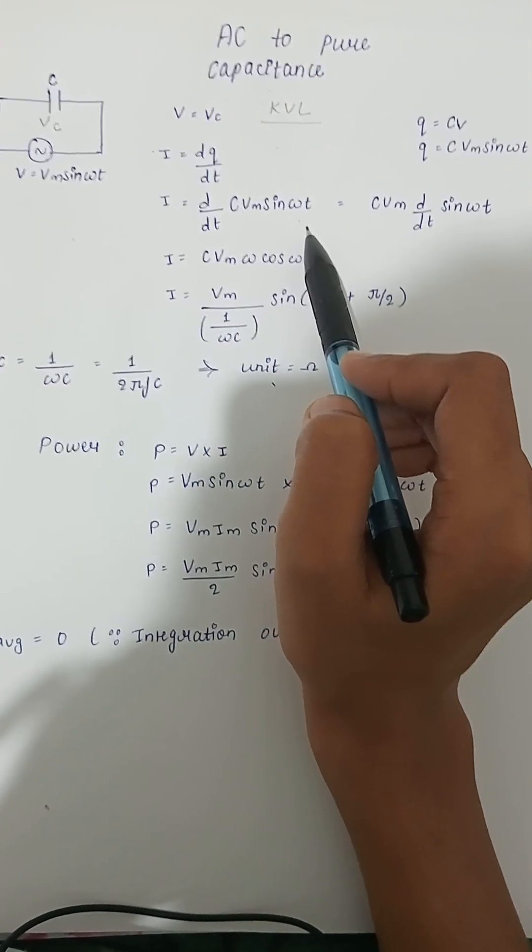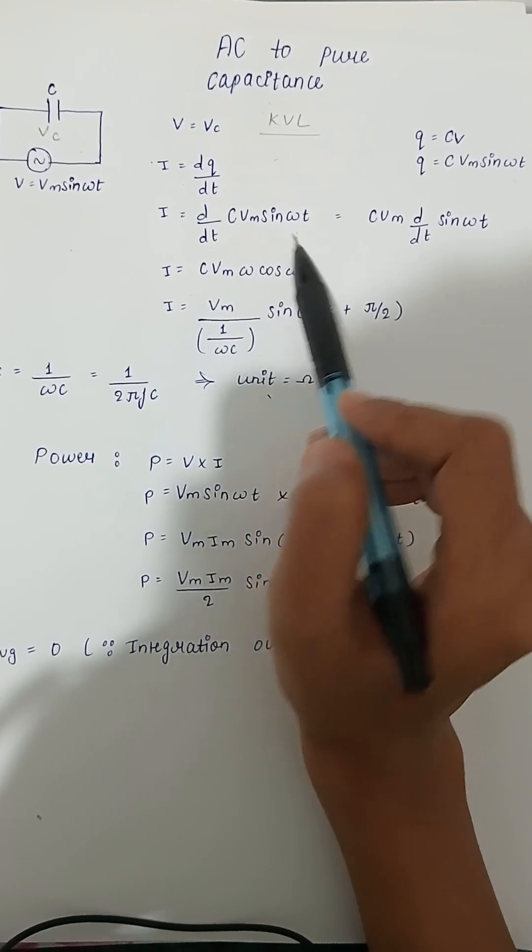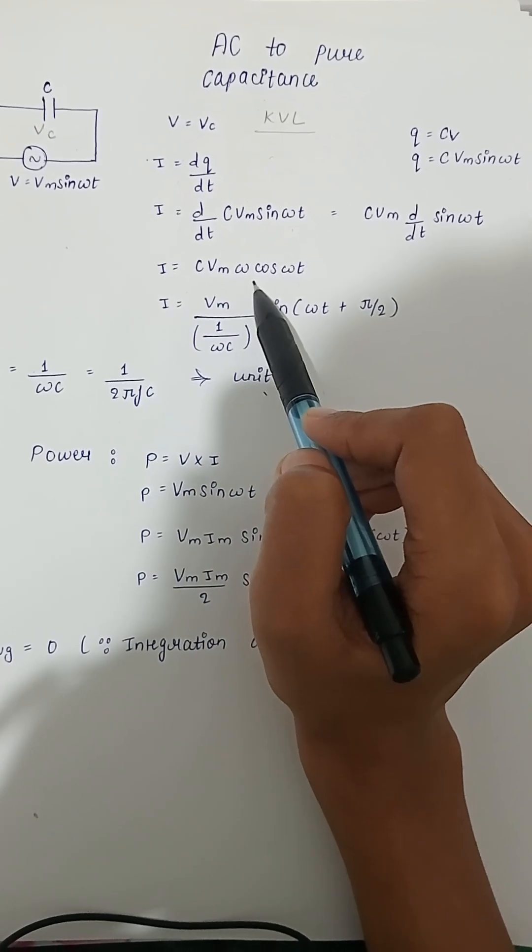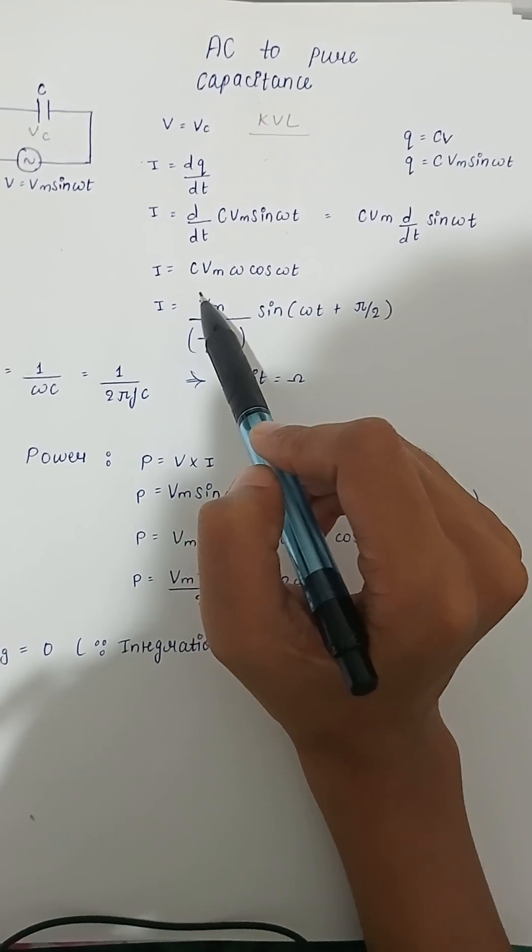CVm sine omega t. Now I becomes after differentiation CVm omega cos omega t. We can write this in this form also.